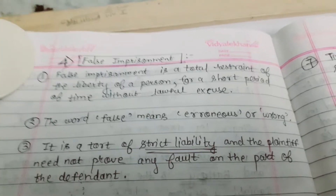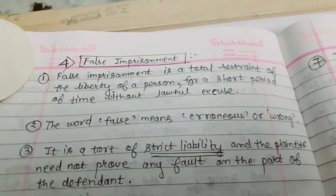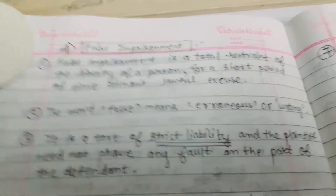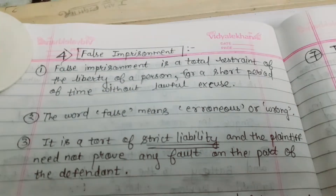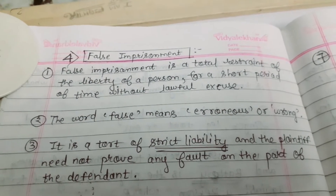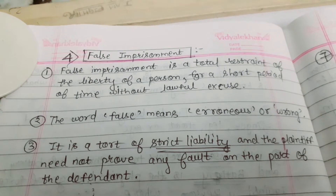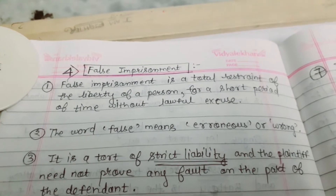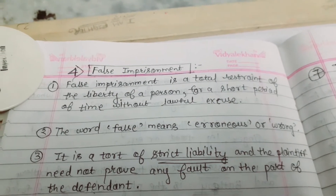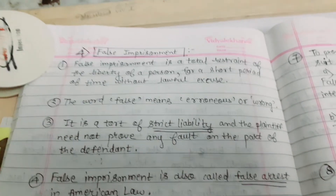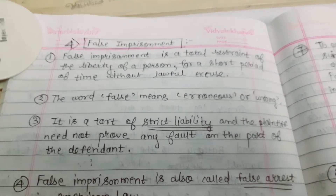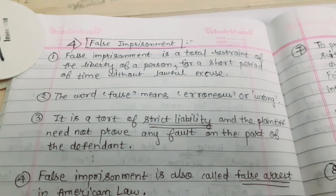The last main form of trespass to the person is false imprisonment. False imprisonment means a total restraint of the liberty of a person for a short period of time without lawful excuse. The word false means erroneous or wrong. It is a tort of strict liability and the plaintiff need not prove any fault on the part of the defendant.